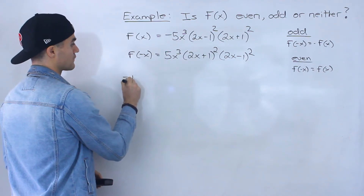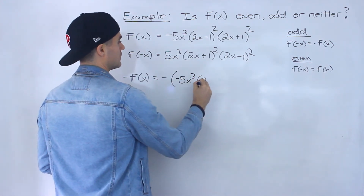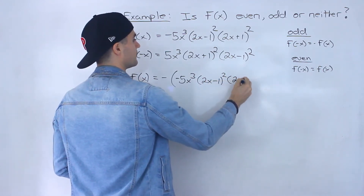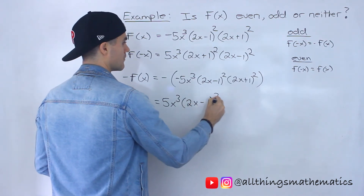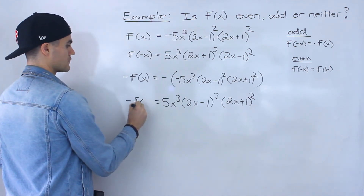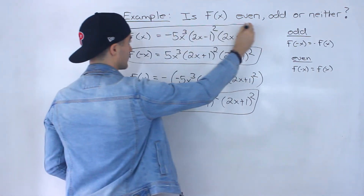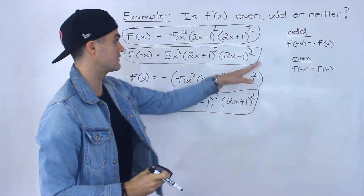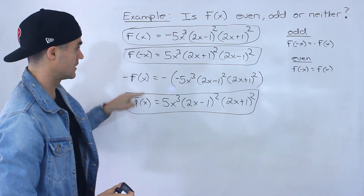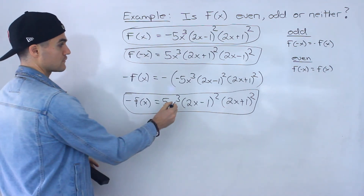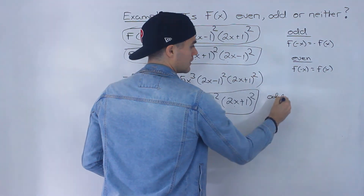But let's see if f of negative x equals negative f of x. We just put a negative in front of the given function f of x — negative times negative is positive, and everything else stays the same. So you always want to have three expressions: f of negative x, negative f of x, and the original function f of x, and then compare them to see if any of these hold. As we mentioned, f of negative x does not equal f of x. But notice that f of negative x does equal negative f of x — they're the exact same thing: 5x cubed, 2x plus 1 squared, 2x minus 1 squared. So we know that this function ends up being odd.